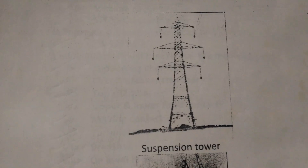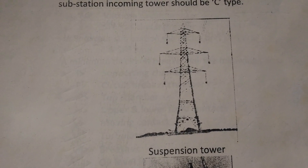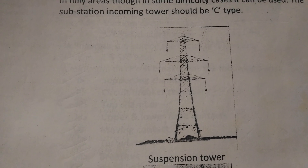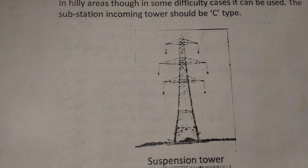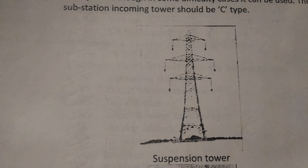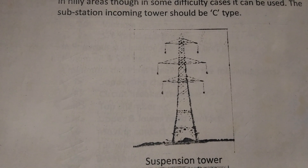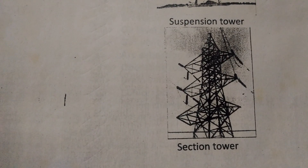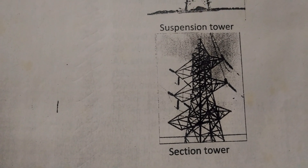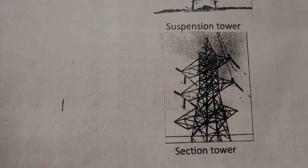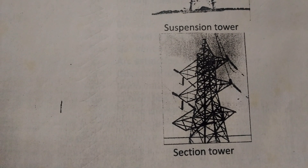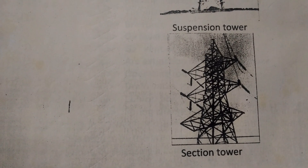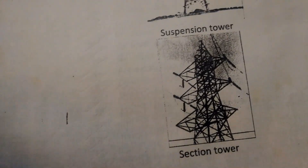In the pictures you can see the suspension type tower. Generally, where straight or through lines are just passing, the suspension type tower is used. Section towers are generally used at turning points, crossing points, and the last incoming tower of a transmission substation.